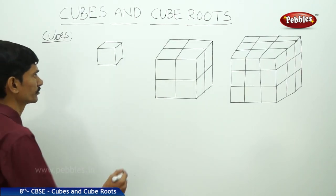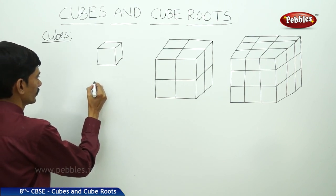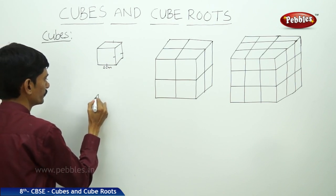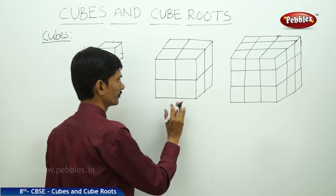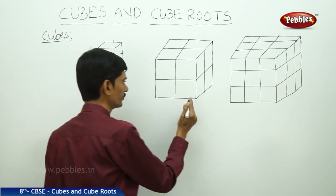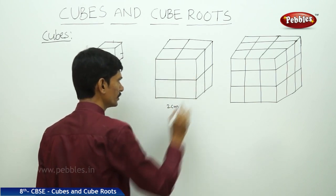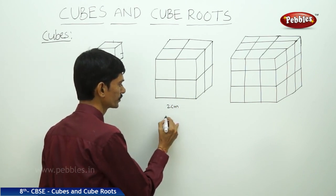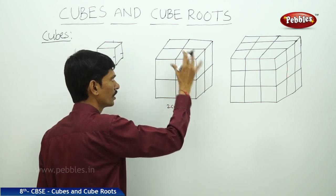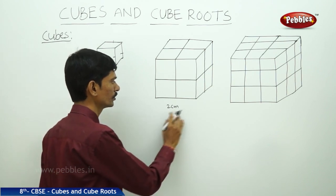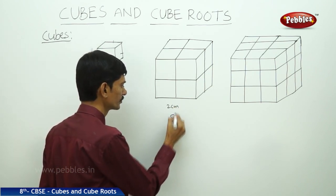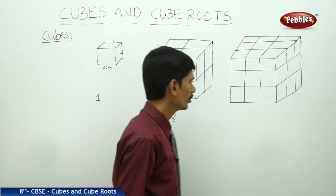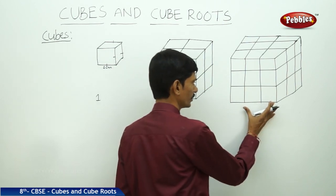Now let us take some cubes whose side is one centimeter. In the first figure, the side of the cube is one centimeter, so there is only one unit cube. In the second cube whose side is two centimeters, along length there are two cubes, along width two cubes, and along height two cubes — giving two times two times two, which is eight unit cubes.